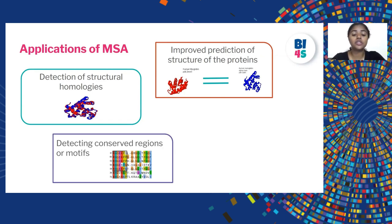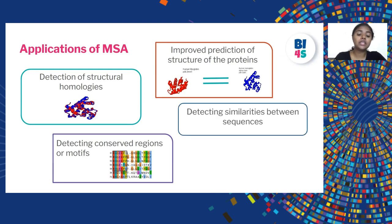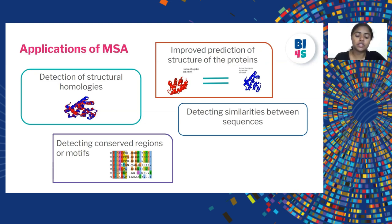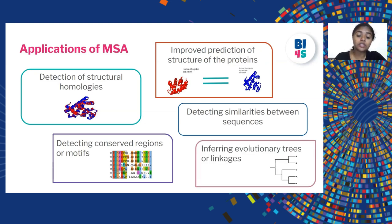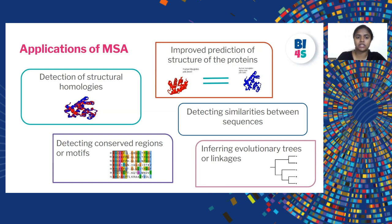Multiple sequence alignment can also help in improved prediction of protein structure. As we know, the important insights of a protein or DNA sequence lie in the conserved regions or motifs of their sequences. Through multiple sequence alignment, we can find these conserved regions that are similar across sequences. Based on the conserved regions found, we can build evolutionary trees or linkages of these sequences to understand how similar they are and what is the ancestral sequence.